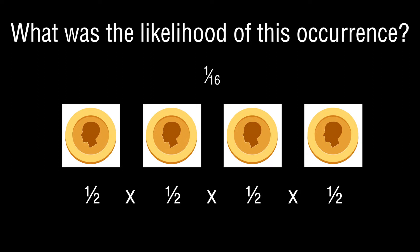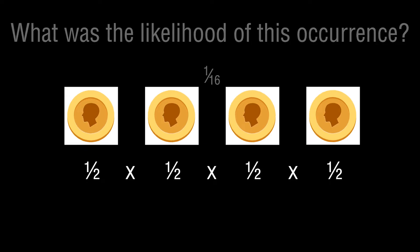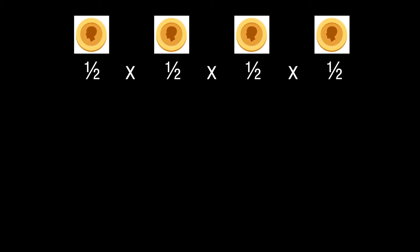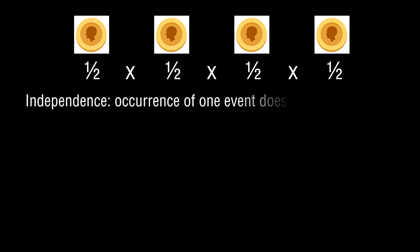That gives us 1 in 16. If you did that, you actually invoked two really important principles around probability and statistics. I've provided a link in the description to a previously published video where I discuss these concepts in detail. The first principle you invoked was independence — that is, the occurrence of one event has no bearing on the probability of another event.